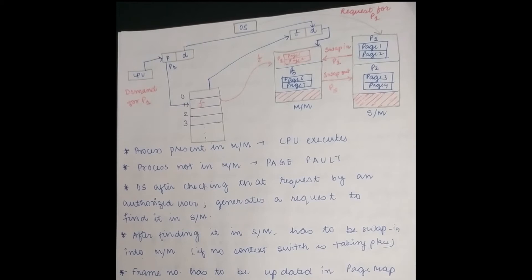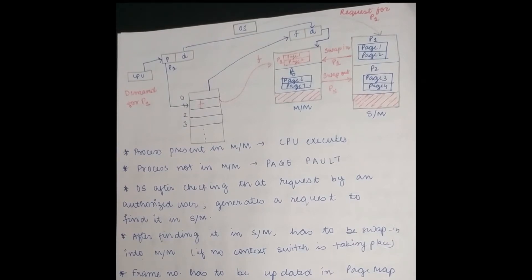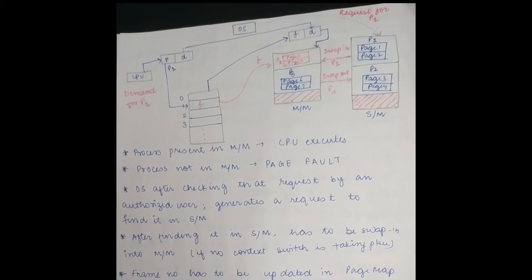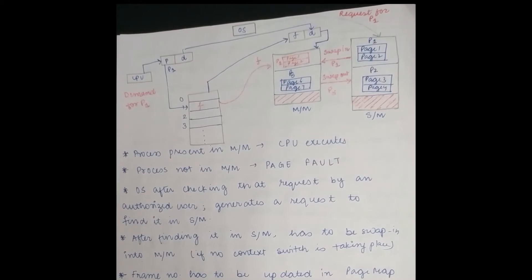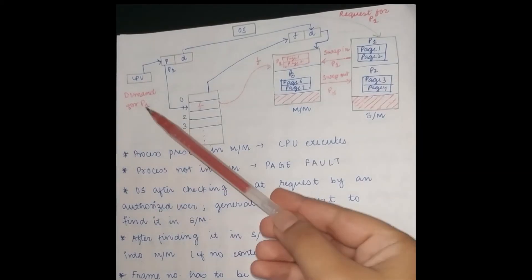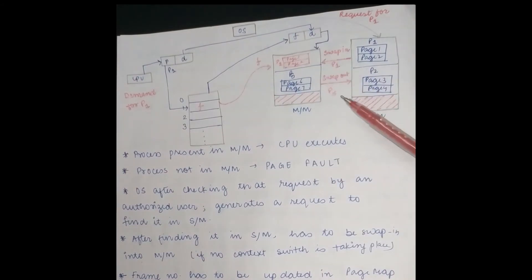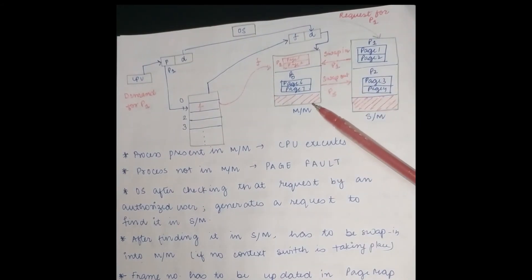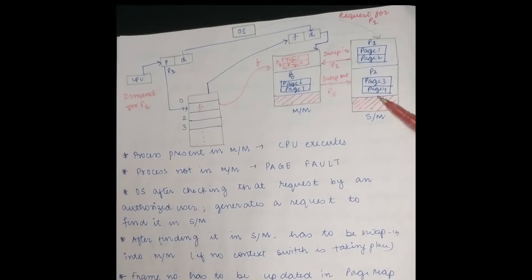Let's take the first case: the CPU demands a page that is already in main memory, so the CPU simply executes it. In the next case, the CPU demands page P1, but P1 is not initially in main memory, so we have to bring it from secondary memory.